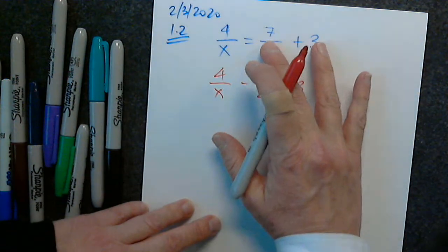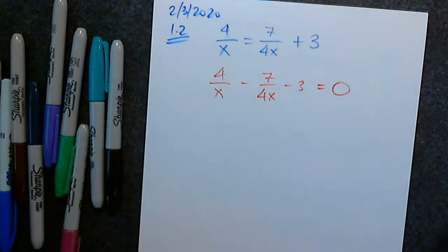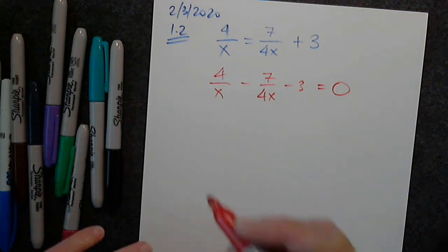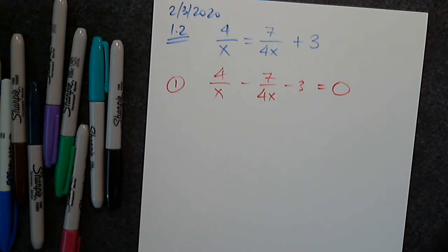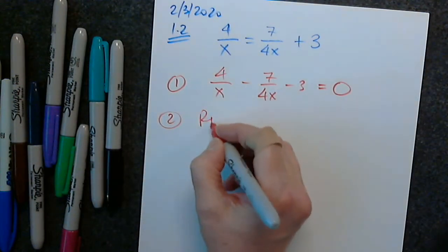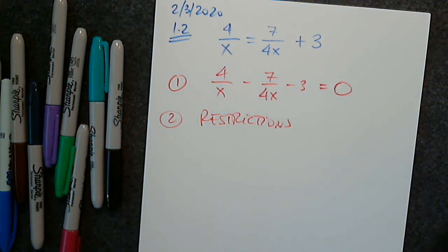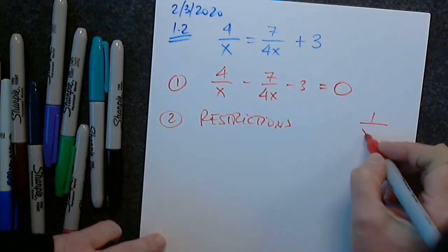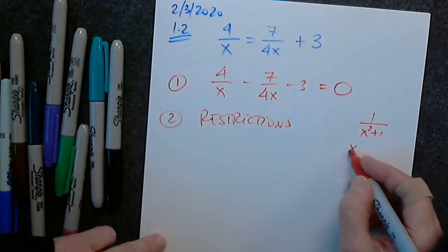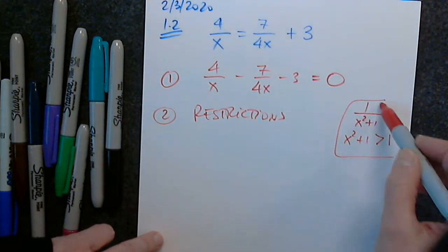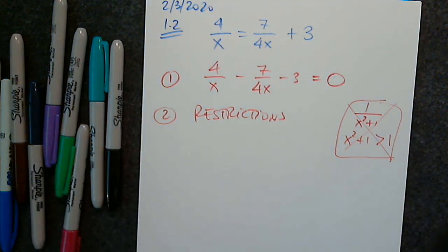What is left on the other side when I move these two terms to the left? In step number 2, I have to write restrictions. There must be some restrictions — though not always. For example, x squared plus 1 is never 0, so there would be no restrictions in that case. But for this problem, we do need restrictions.